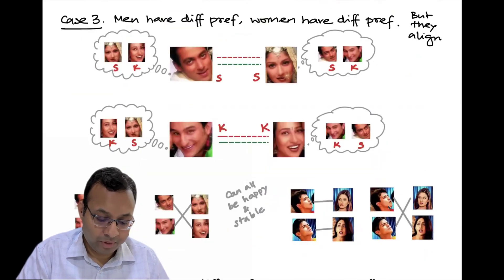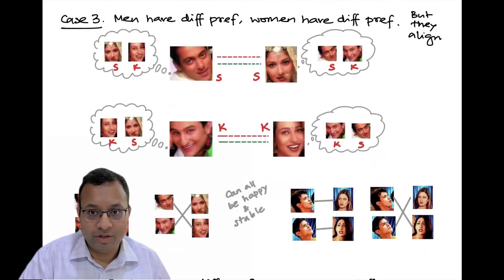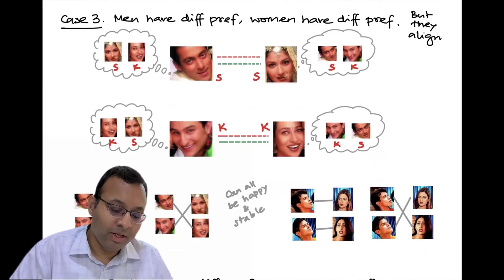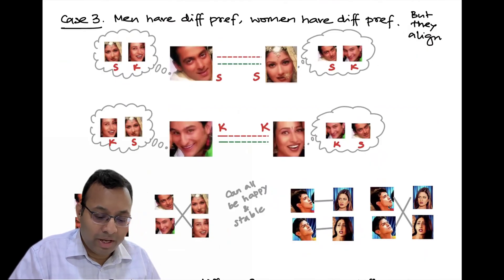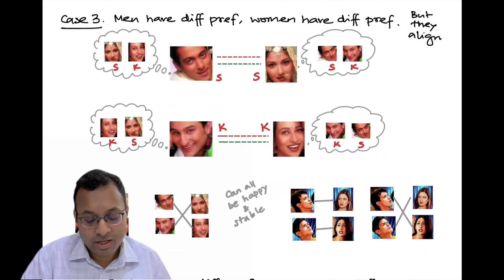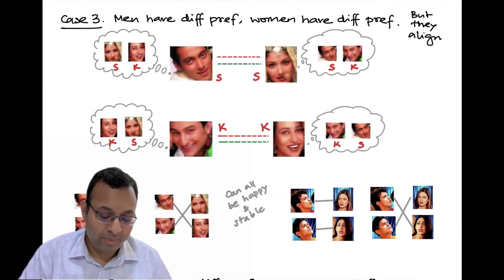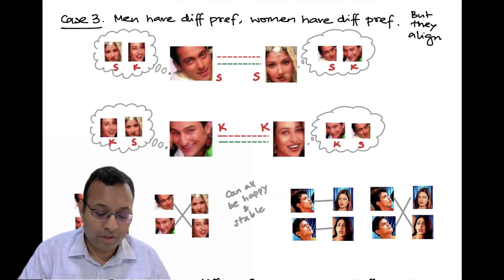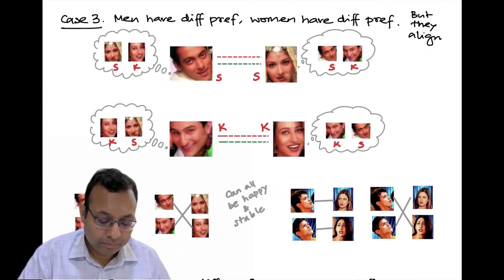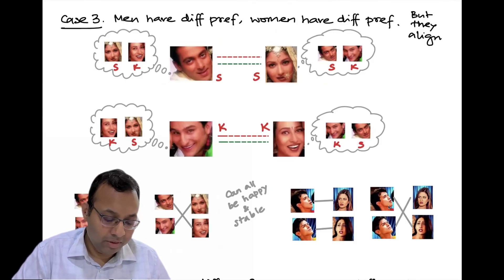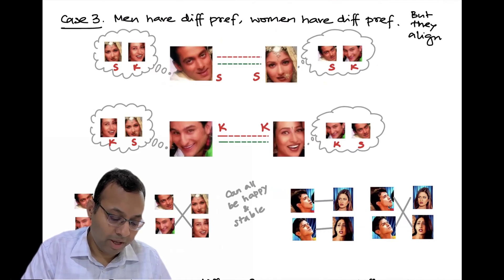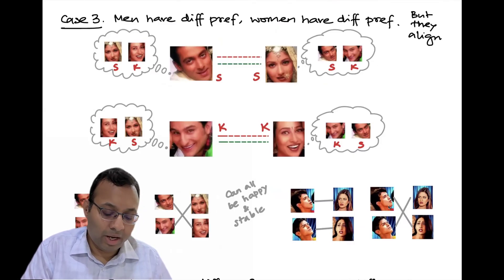Now let's look at a case where men have different preferences and women also have different preferences, but they align — like a traditional Bollywood movie. Salman S likes Sonali S and Saif Ali Khan K likes Karishma K — the names even match. Salman prefers S over K and Saif prefers K over S. For women, S prefers Salman and K prefers Saif. So men have different preferences, women also have different preferences, but they align — whoever is Salman's top preference is also Salman's top preference for that woman. In this situation, all are happy and it is a unique stable matching. The alternate pairing is not stable.